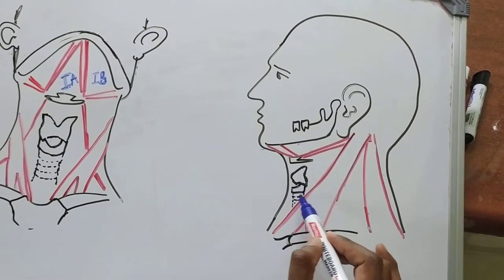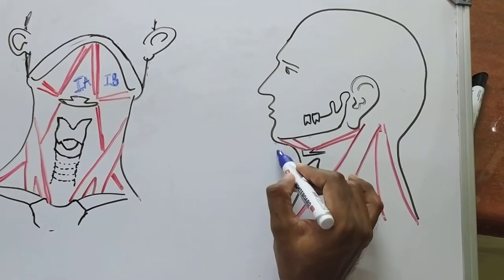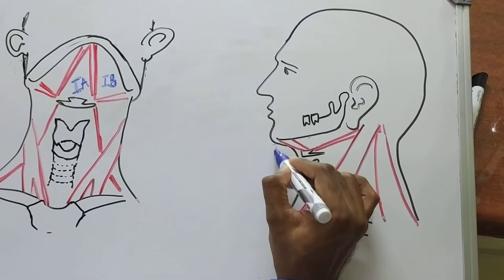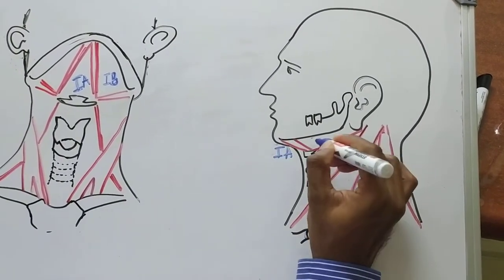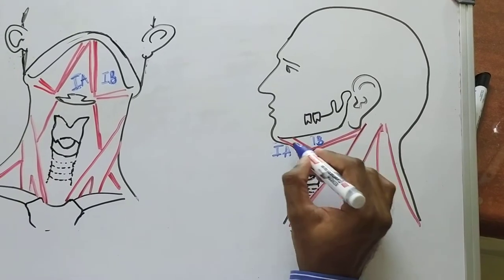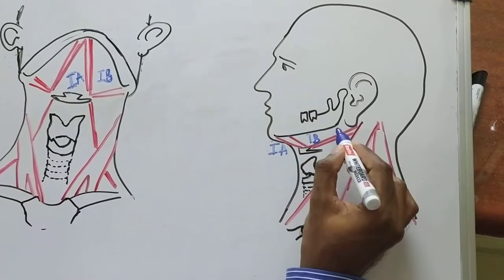The thyroid cartilage, the cricoid cartilage in the trachea, hyoid bone. So here was level 1A, and this was the level 1B, anterior posterior digastric, lower border of the mandible.